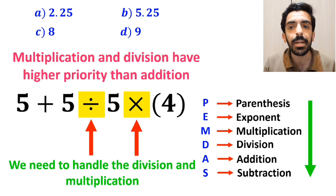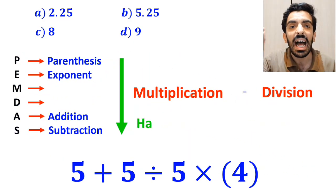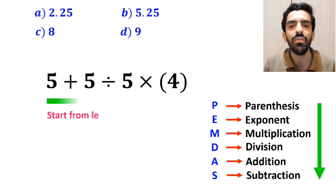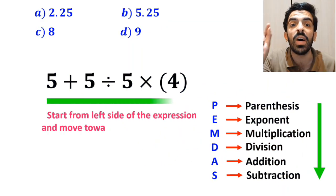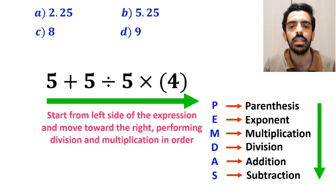However, it's very important to note that in the PEMDAS rule, multiplication and division have the same level of priority. In this case, the best thing to do is to start from the left side of the expression and move toward the right, performing division and multiplication in order.